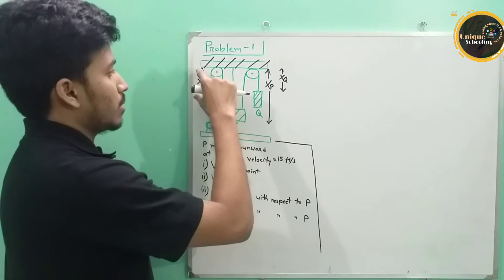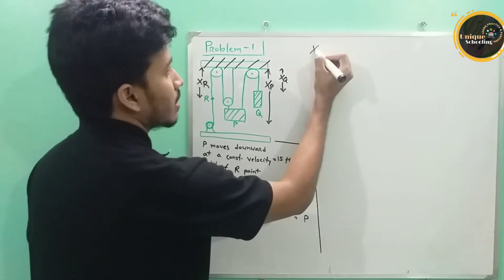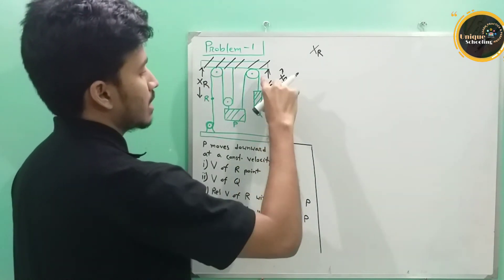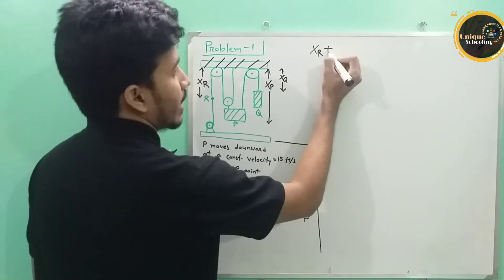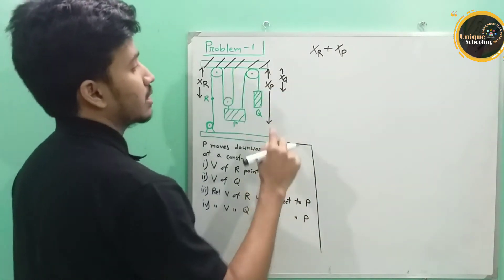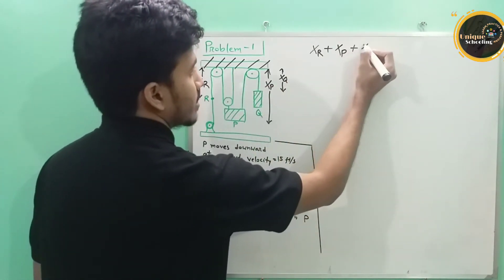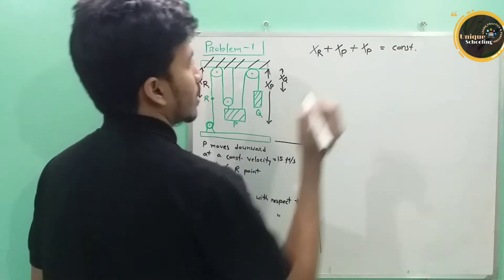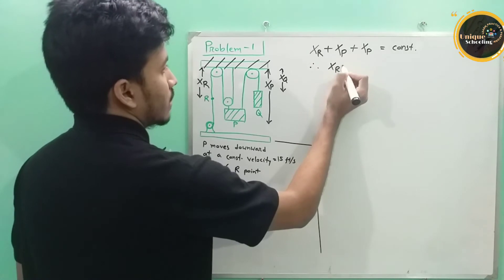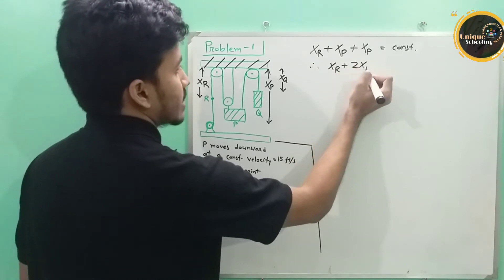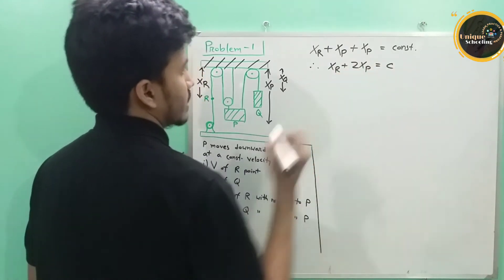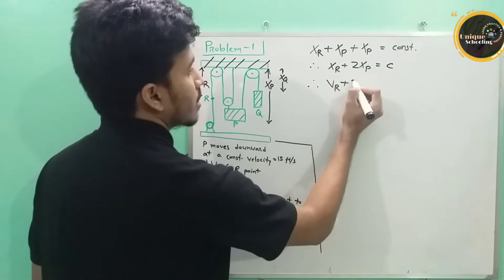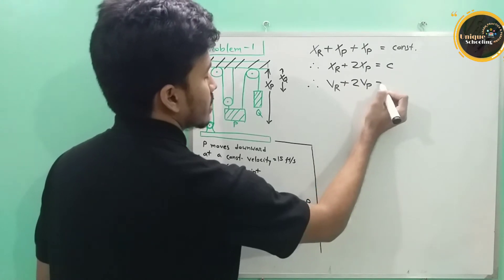I am going to show you that the distance of xR and the distance of xP. So xR plus 2xP is equal to a constant. Therefore, differentiating, vR plus 2vP is equal to zero.